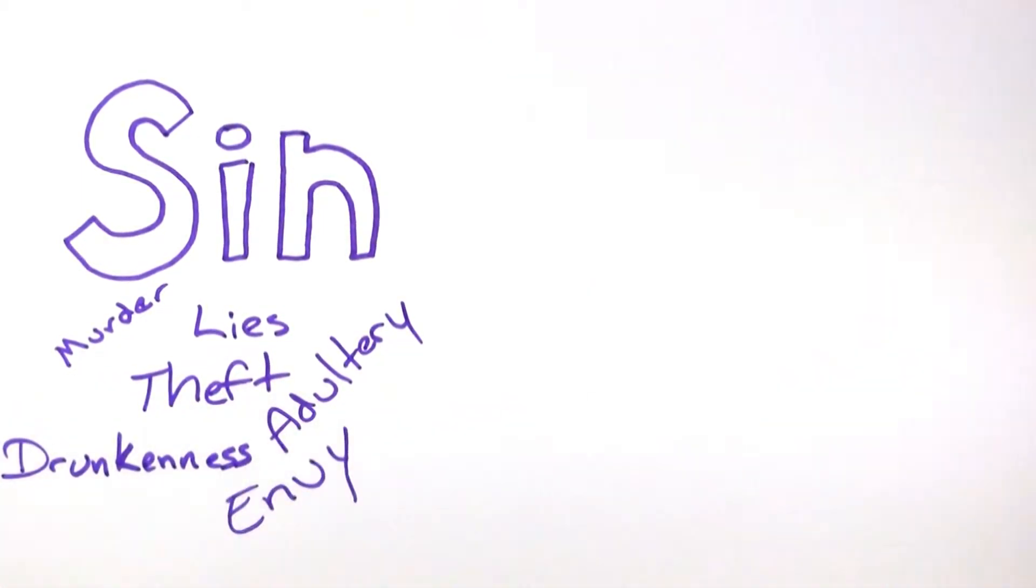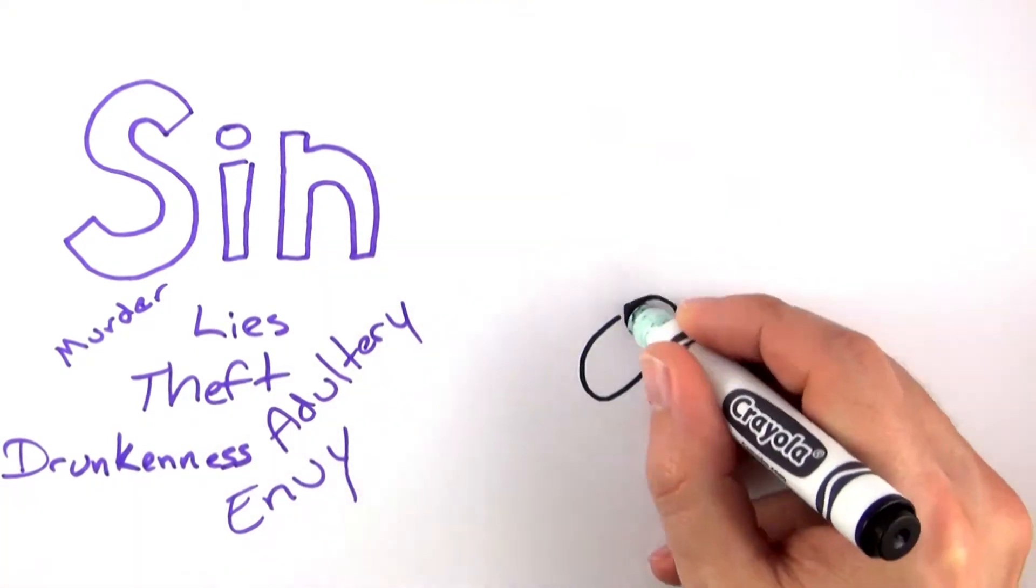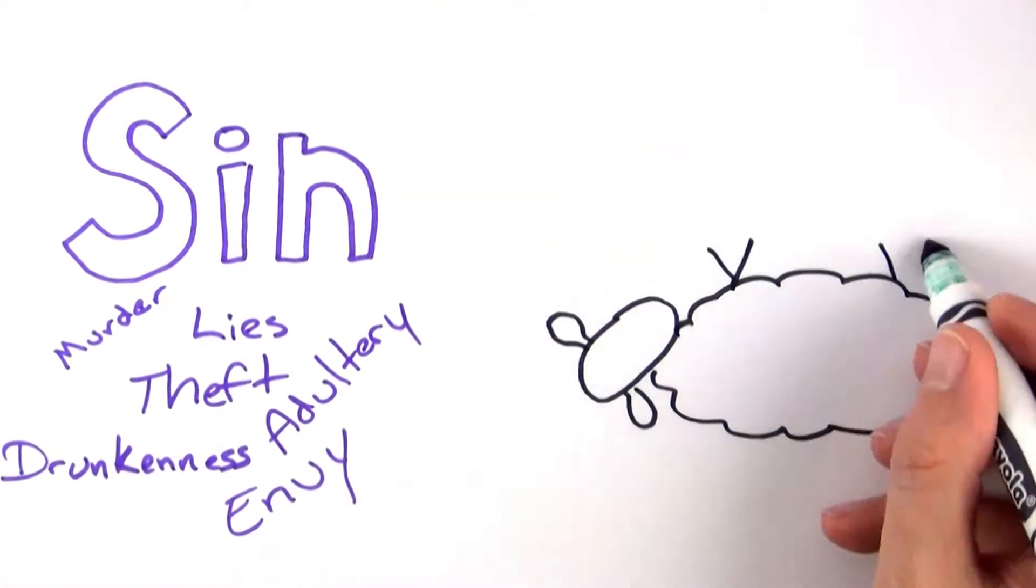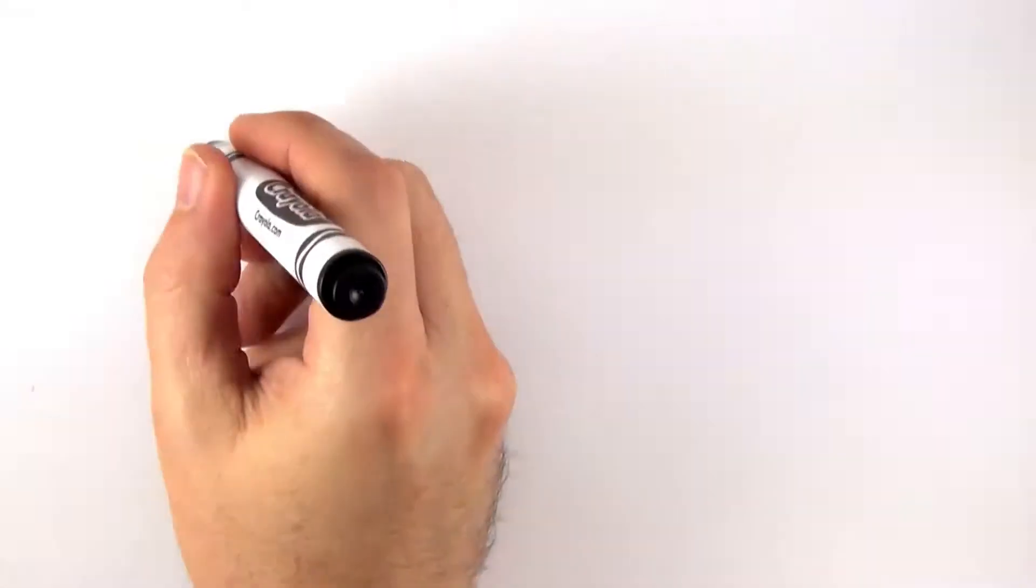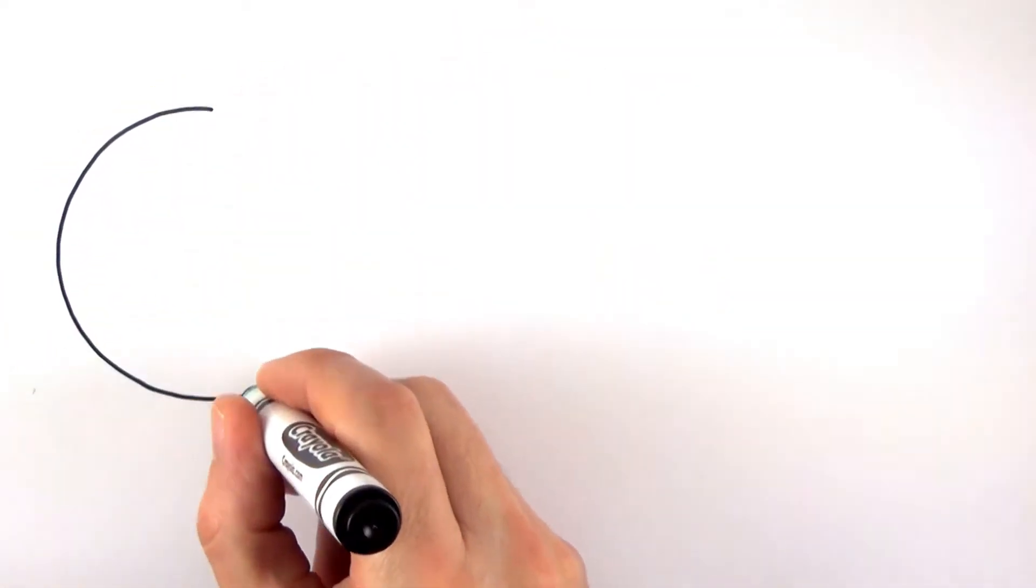When someone offered an animal sacrifice, God released them from the penalty of eternal death, but the animal's blood did not erase their sins. The sins were still there, but they were covered up by the blood. This form of reconciliation was only temporary.